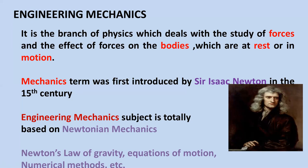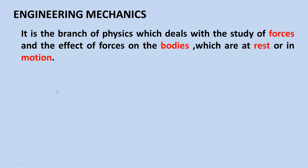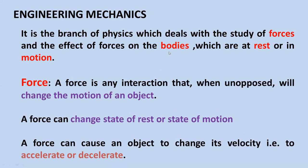Newtonian mechanics is applied to macroscopic phenomena. For example, if you throw one object with some initial velocity and want to find its final position, such a calculation is called Newtonian mechanics, where we can use Newton's laws. Looking at the definition of engineering mechanics, we can identify three important points: force, body, and motion. We will now see the meaning of each.